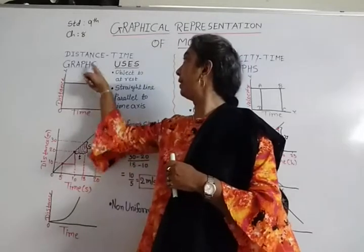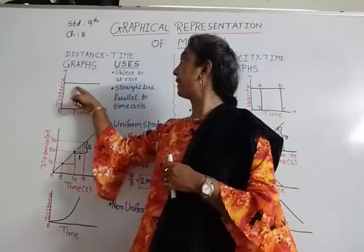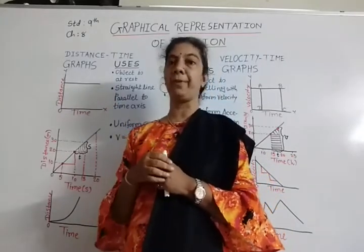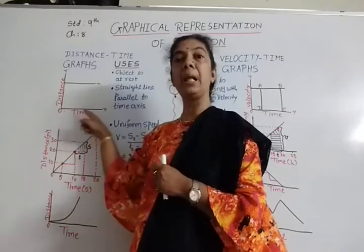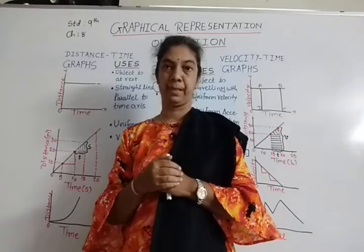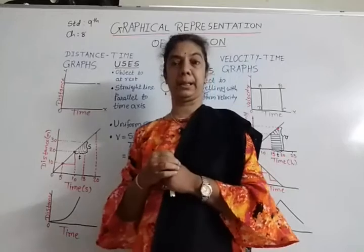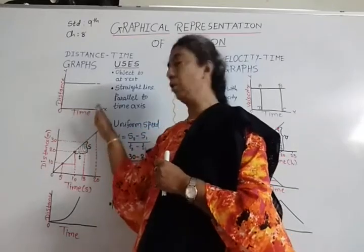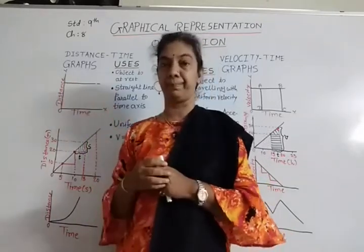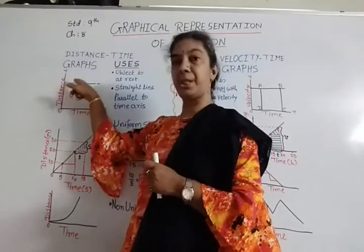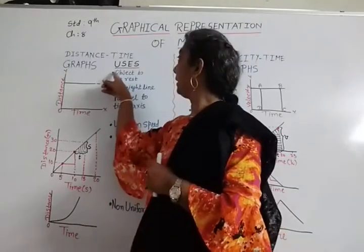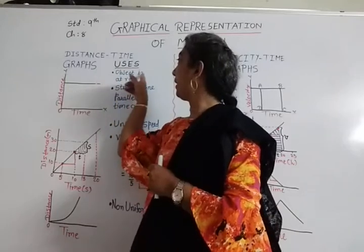The first distance-time graph has the shape of a straight line parallel to the time axis (x-axis). This tells us that as time goes on, the distance — which represents the position of the object — remains the same. From this we can analyze that the object is at rest.